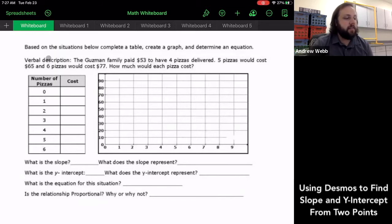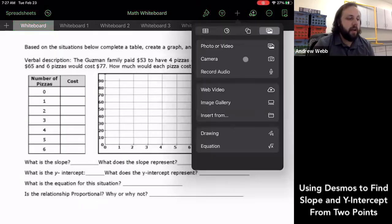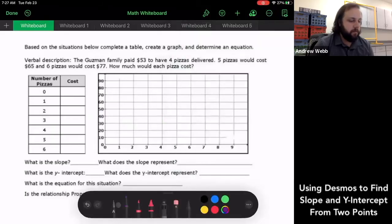If I look at this verbal description, it says the Guzman family paid $53 to have four pizzas delivered and five pizzas would cost $65 and six pizzas would cost $77. So I've actually got three points. I just need to use my first couple here. So I've got $53 for four pizzas and five pizzas would cost $65.